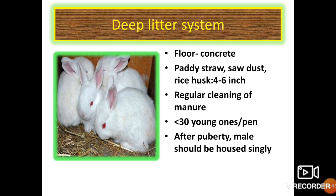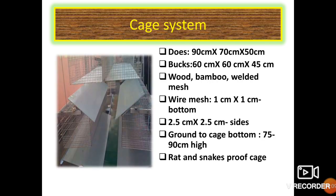For the deep litter system, the floor should be made of concrete for easy cleaning and can be covered with paddy straw, sawdust and rice husk to a height of 4 to 6 inches. Regular cleaning of manure is important and a pen should not contain more than 30 animals. After puberty, males should be housed singly to avoid fighting. For the cage system, the cage size for does is 90 cm length, 70 cm breadth and 50 cm height; for bucks it is 60 x 60 x 45 cm. Cages may be made of wood, bamboo or welded mesh. Wire mesh at the bottom is 1 cm x 1 cm and on the sides 2.5 cm x 2.5 cm. The height from the ground to the cage bottom should be 75 to 90 cm. Cages should be rat- and snake-proof.